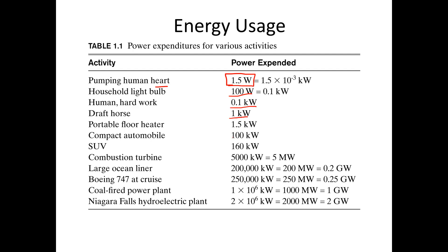A draft horse would be about 1 kilowatt. If you have a portable plug-in floor heater that converts electricity into heat, you're looking at about 1.5 kilowatts. A compact car is about 100 kilowatts; an SUV can be up to 160 kilowatts. Going out to bigger energy-producing machinery such as a combustion turbine, we're looking at 5,000 kilowatts or 5 megawatts. A Boeing 747 at cruise speed is about 250 megawatts. The Niagara Falls power plant, when running, is at 2 gigawatts or 2,000 megawatts.